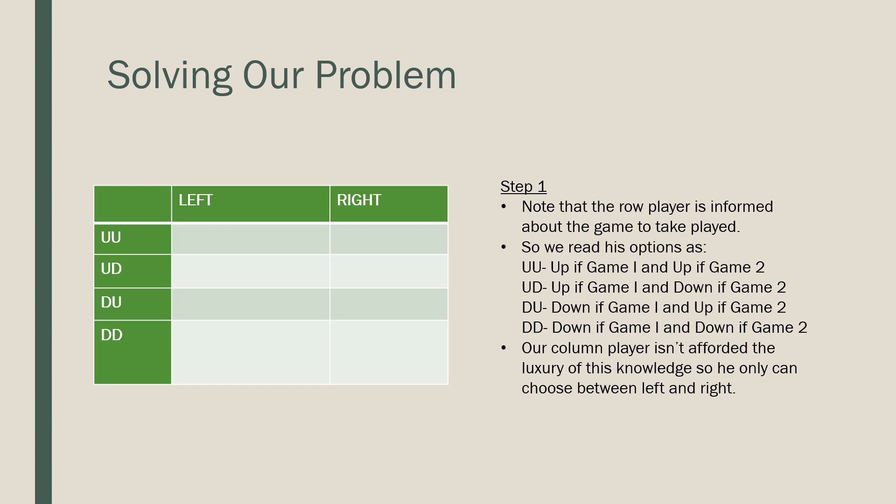So in terms of solving our problem, we note that our column player is kept in the dark, so he has only the choices between left and right. But our row player has contingent plans. So let's go and try to understand what this means on our left hand side.